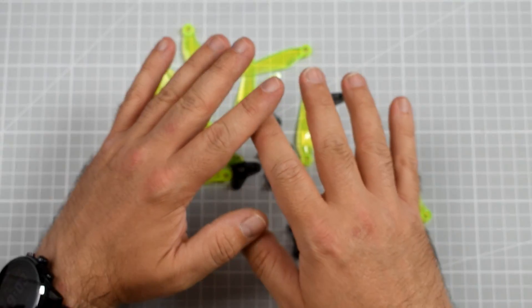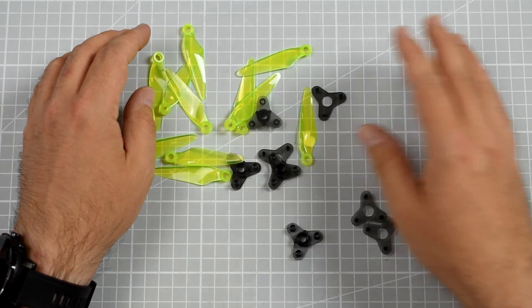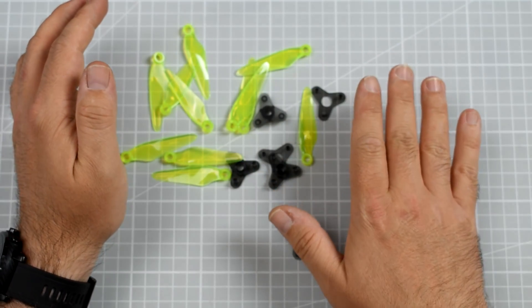We'll assemble four propellers - 12 blades and four hubs.